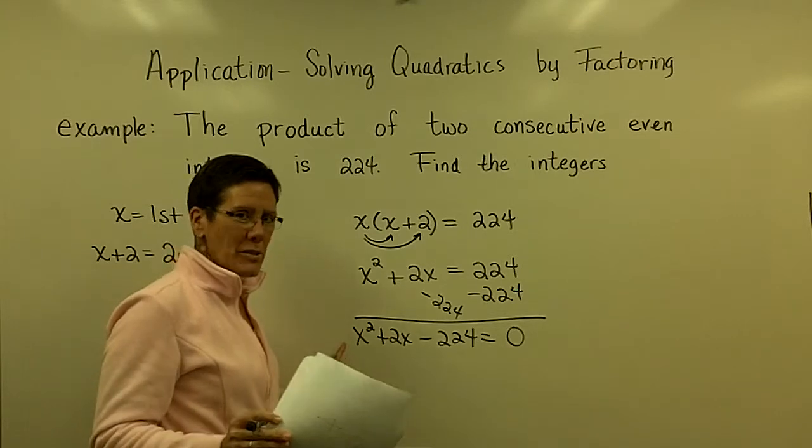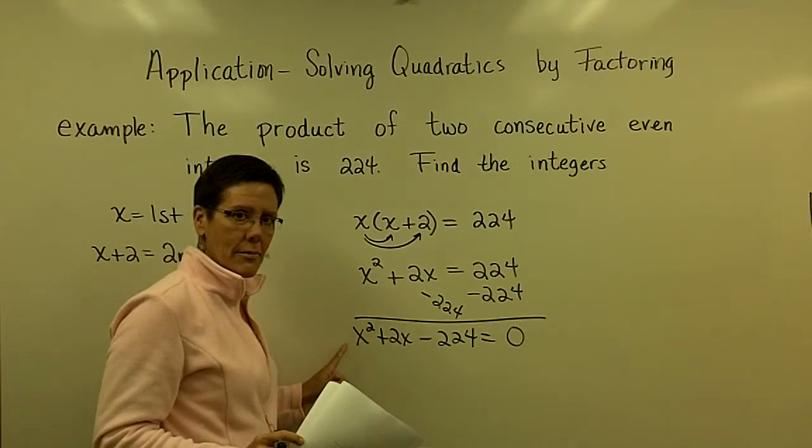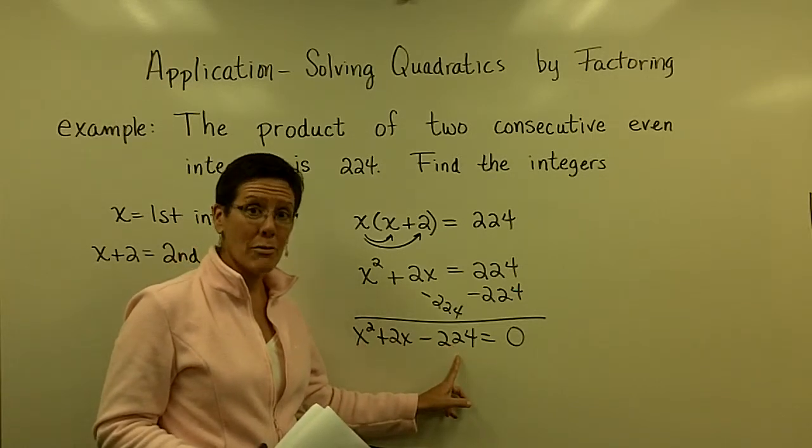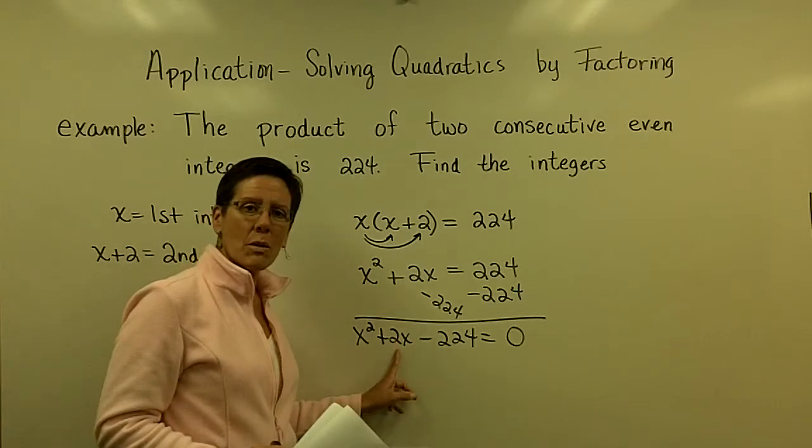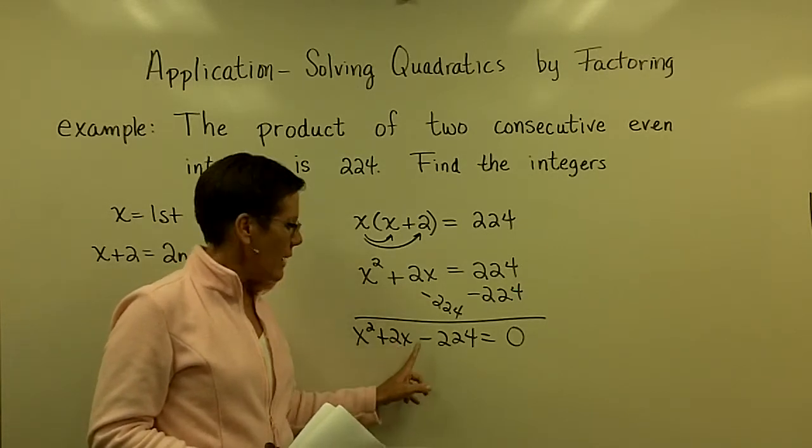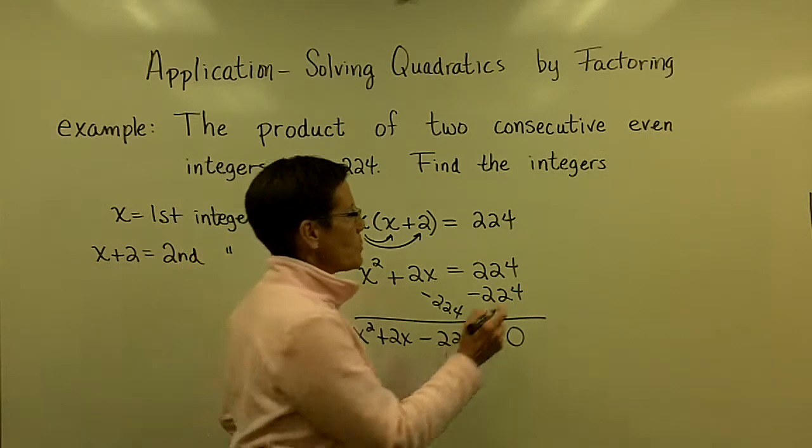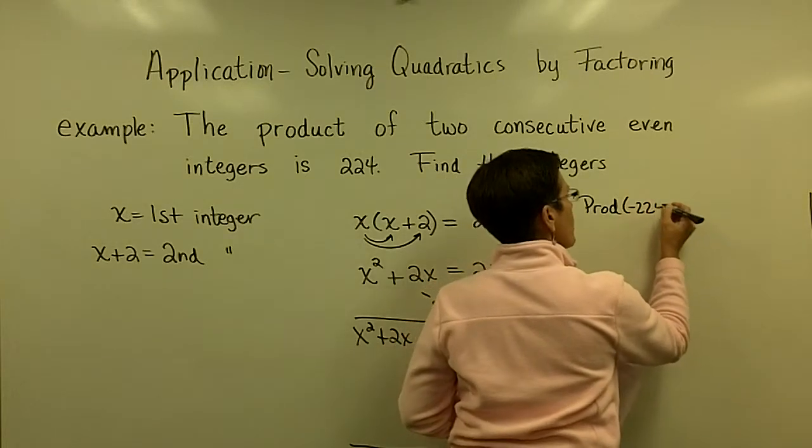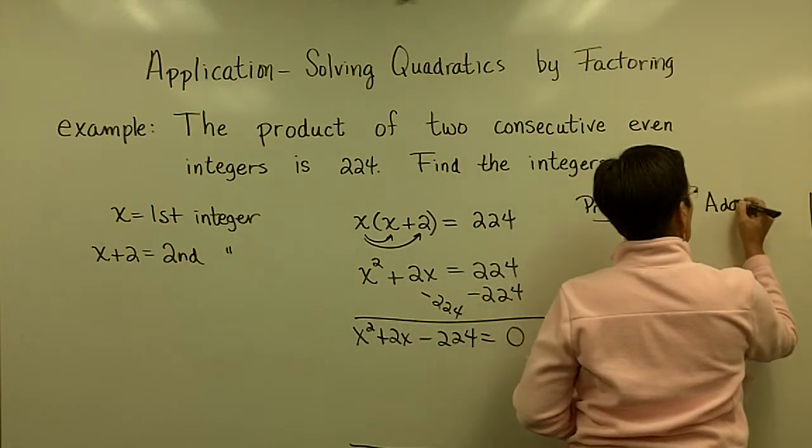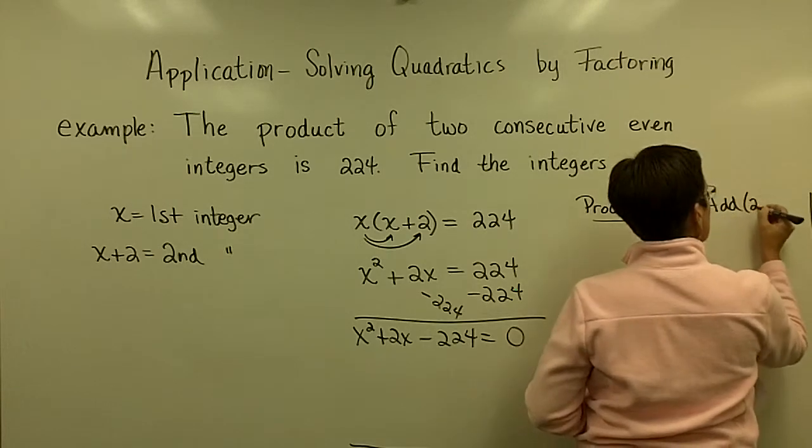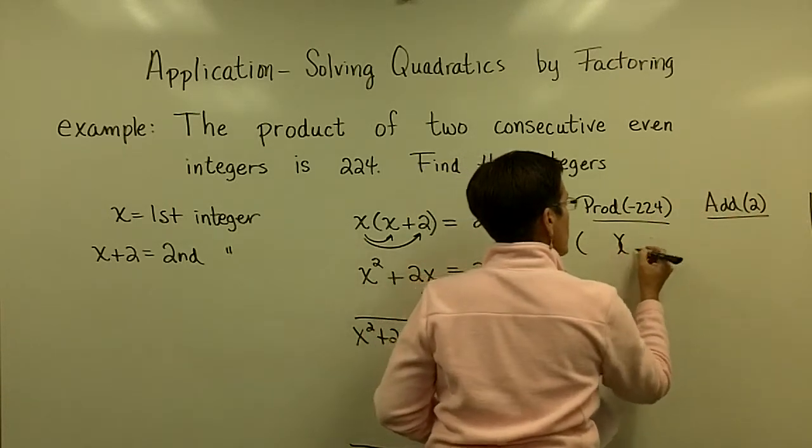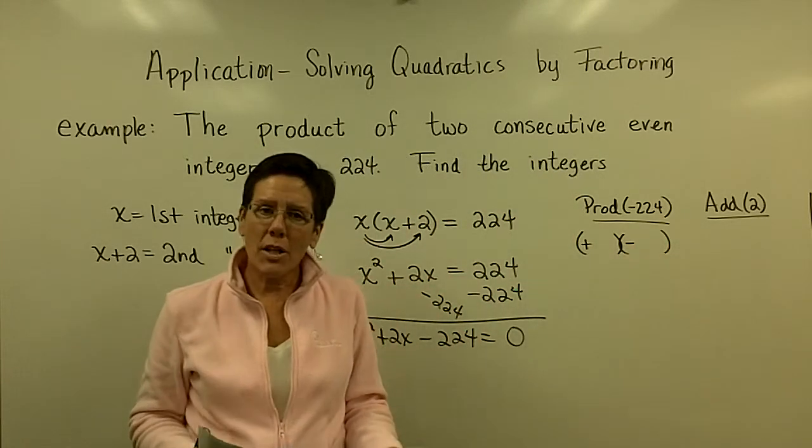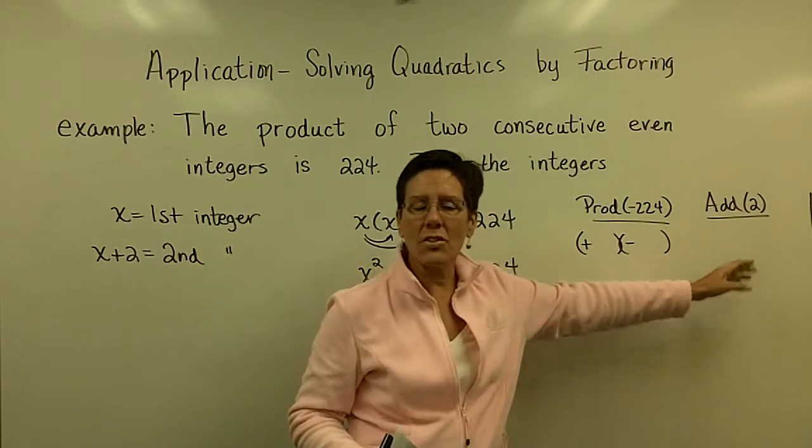Man, easy trinomial factor, kind of, because there's a 1 in front of the x squared term. But I'm looking for two numbers that multiply to be a negative 224. But I want them to add to be something really small. So, they have to have different signs. If their product is going to be a negative 224 and they're going to add to be the number 2, one's got to be a positive sign and one's got to be a negative sign. And they better be very close in value for them to add to be just the integer, just the whole number 2.